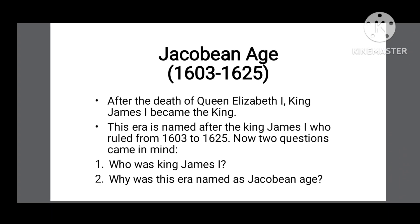The Jacobian Age started from 1603 and lasted up to 1625. After Queen Elizabeth's death, King James became the king of England. This era is also named after King James the First, who ruled from 1603 to 1625.